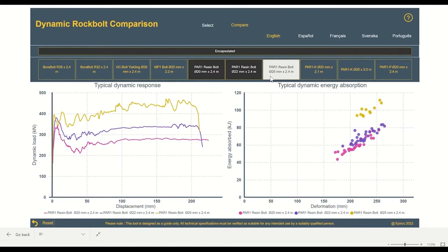If we select the three PAR1 resins, being a 20mm, 22mm, and a 25mm, you can see that the graph is now only reflecting the dynamic load and energy absorption results for those three bolts.